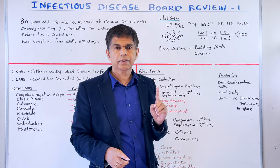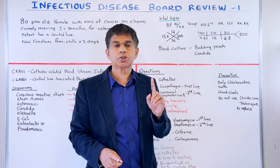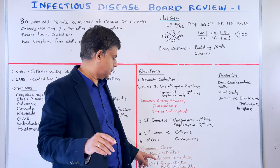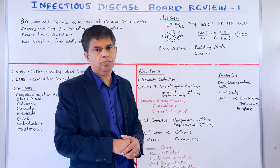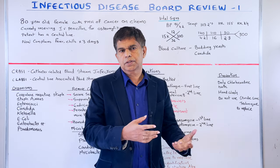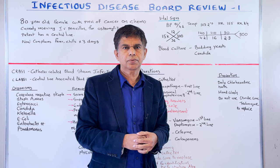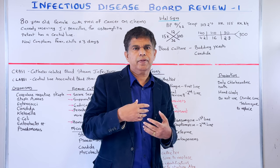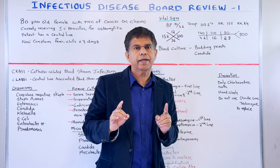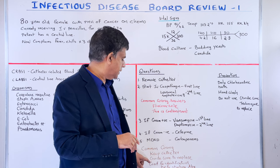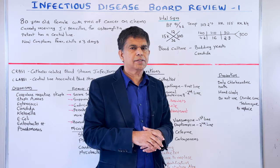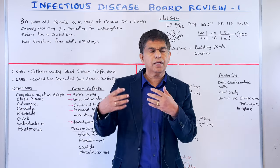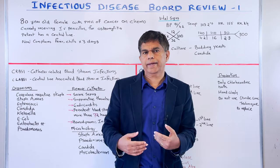Let's review the most common wrong answers. First: keeping the catheter — that is wrong, you must remove it. Second: using a guide wire to replace the catheter — if you know there is a central line infection, you cannot simply remove the old one and place a new one over a guide wire at the same site. Third: waiting for organism identification before starting antibiotics — do not do that. Start antibiotics right away.